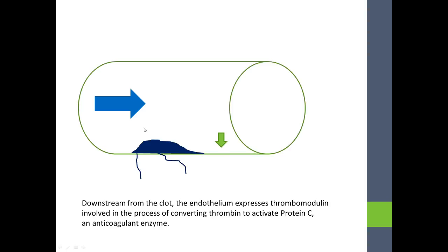The clot stops because of the effect of endothelial expressed thrombomodulin, which is involved in the process of converting thrombin washed downstream from the clot to activate protein C, which is a potent anticoagulant enzyme. The effect of activating protein C here focuses the clot, much like a lens.